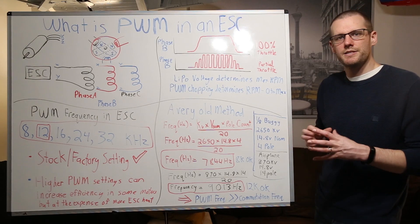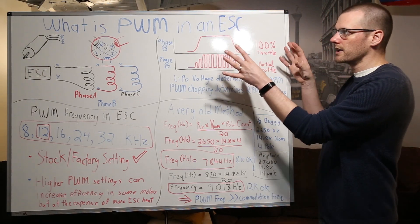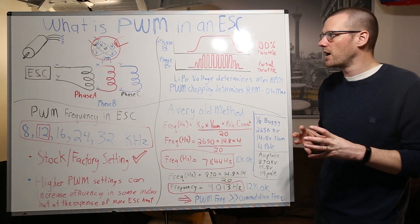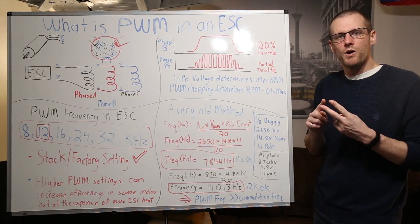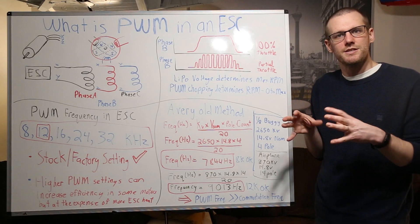In this video, we are going to cover the basics as to how an electronic speed control works. We're also going to get into a big topic about PWM within an ESC. What does it mean? What does it do? And how does it affect the function of the brushless motor slash ESC system?